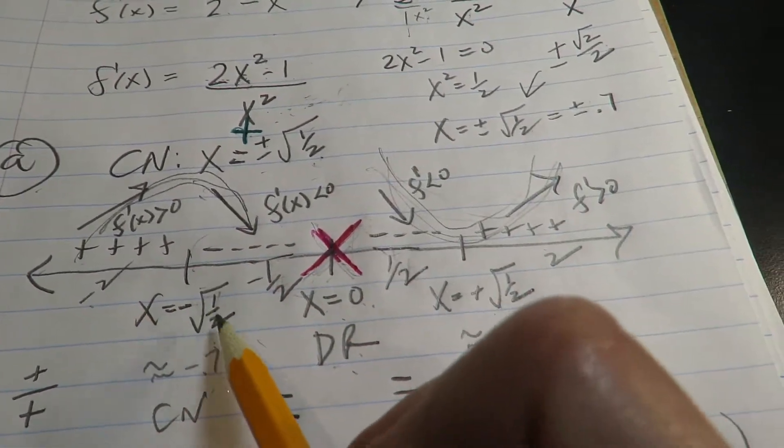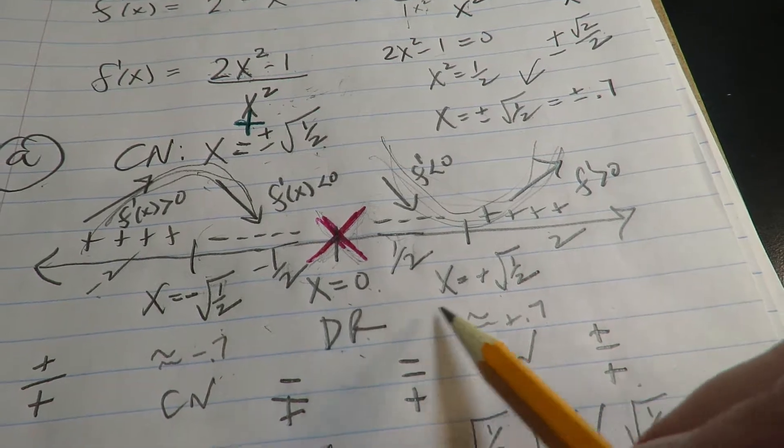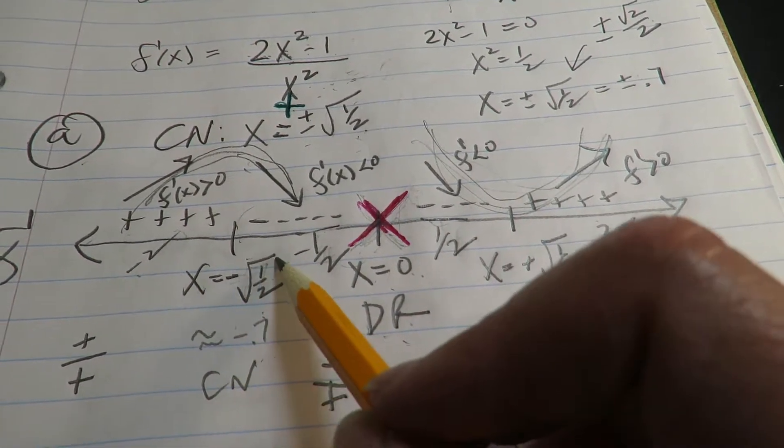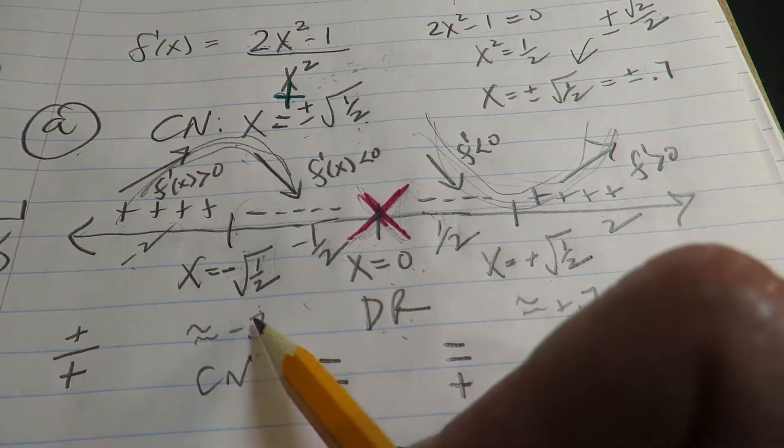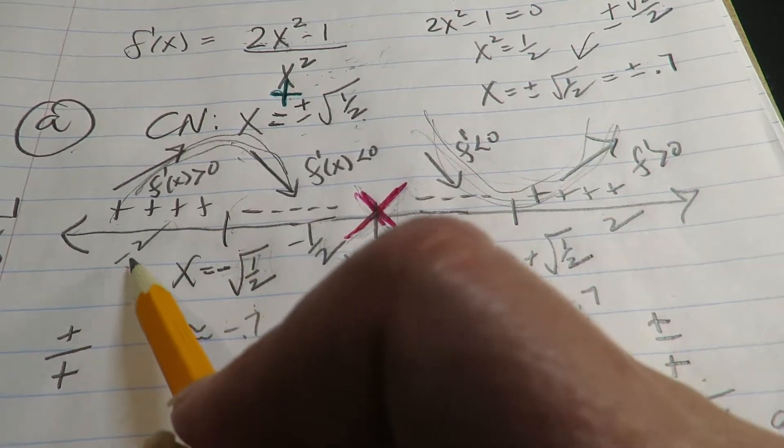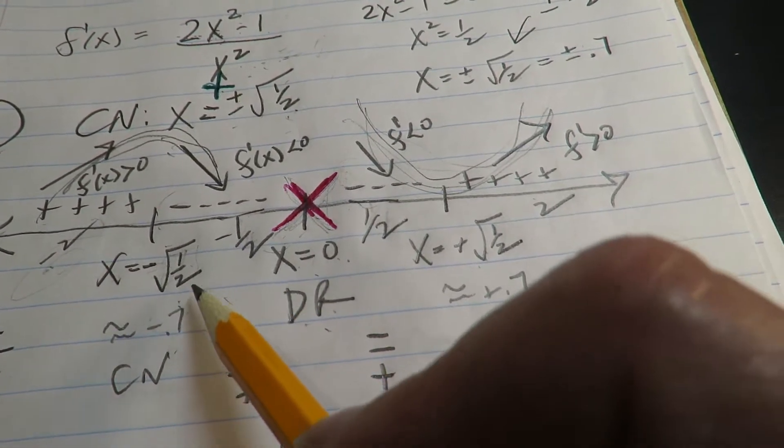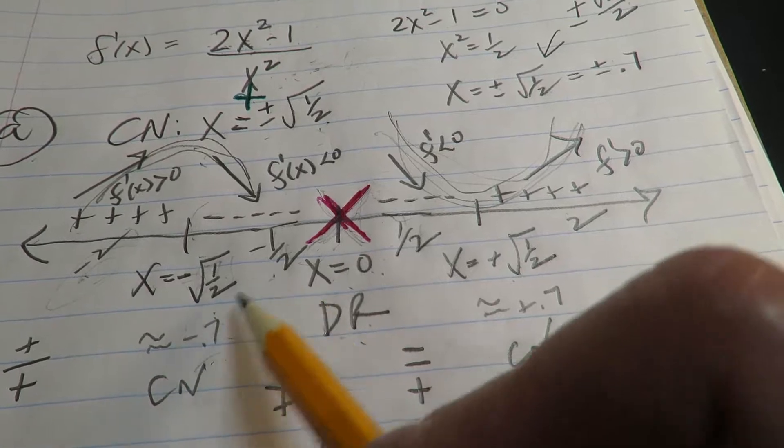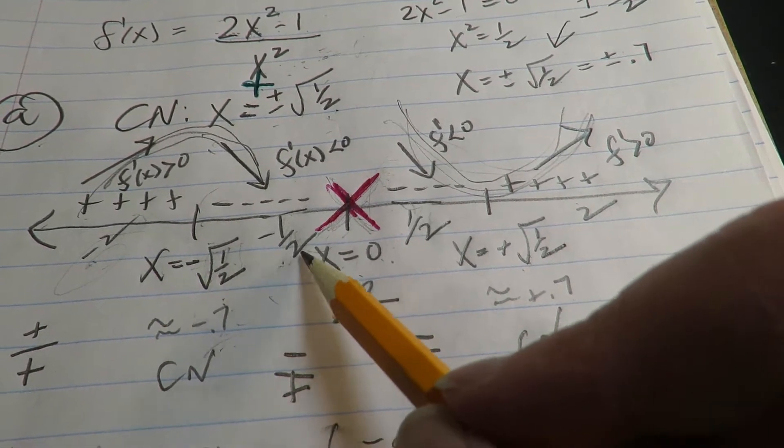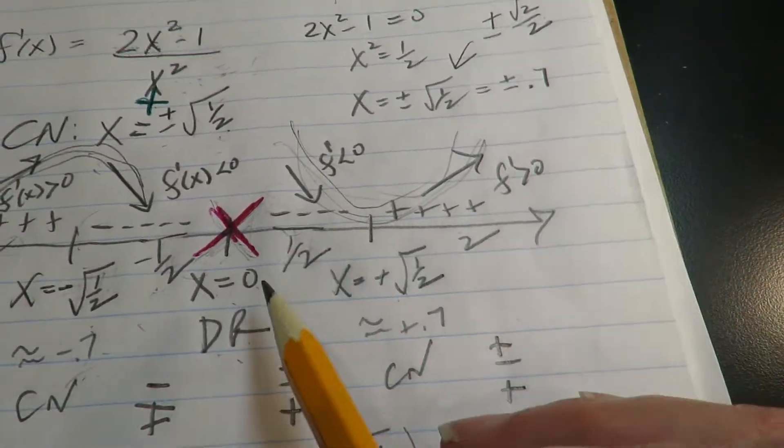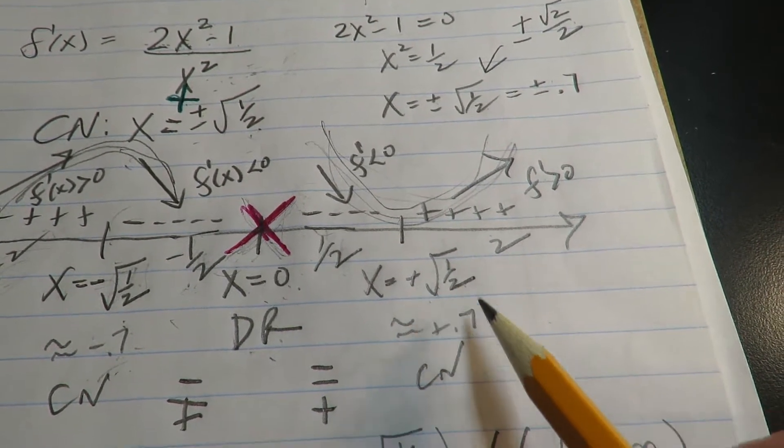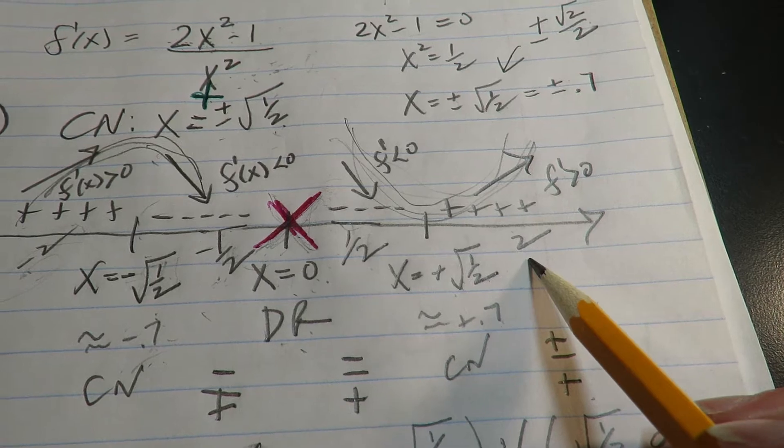Then the next thing I did is I picked some test values around the critical number and the domain restriction. So negative radical one half is about negative point seven. So something to the left of that, I picked negative two. Something in between here and here, I picked negative a half, because this is negative 0.5. Between here and here, I picked positive a half, and greater than this, I picked a two. So those were my test values.